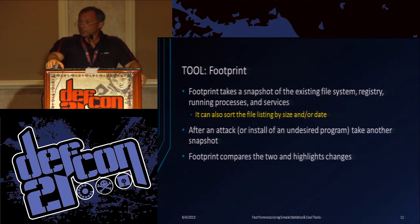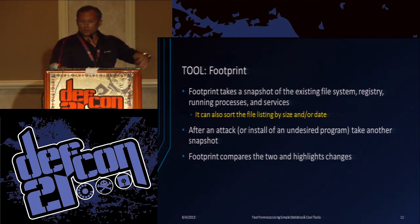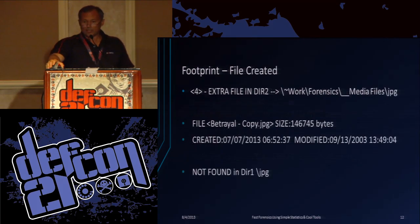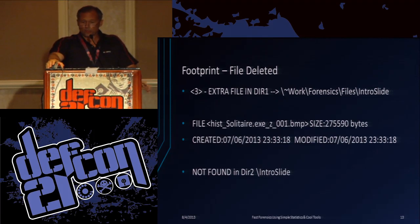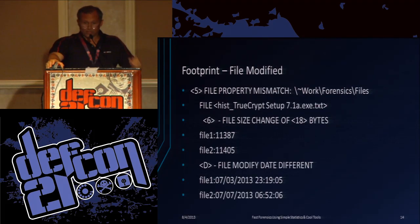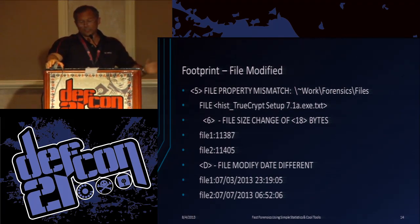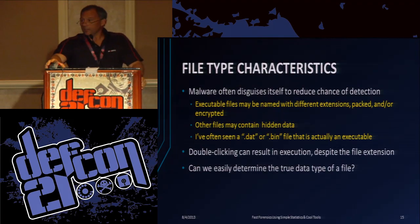Footprint can compare two different snapshots. Here's all the files, what has changed, same thing with registry keys, same things with processes and services. This is just sample output — it shows you if a file was deleted or a file was added. It's a very textual type program. Here's where it shows what it looks like when a file is modified. It just creates this big log file, or small, if there haven't been many changes since the last footprint.